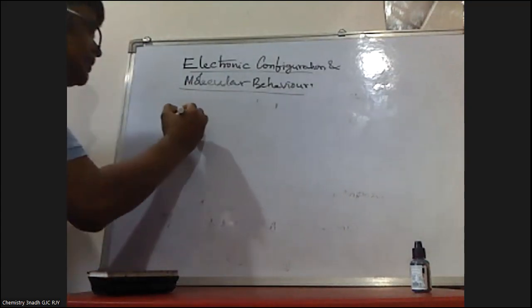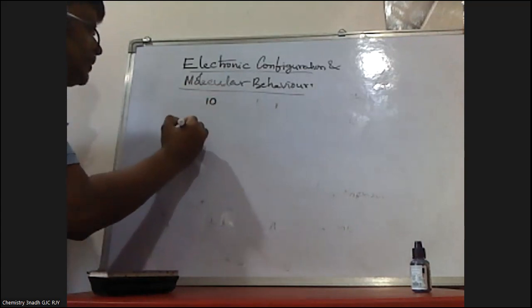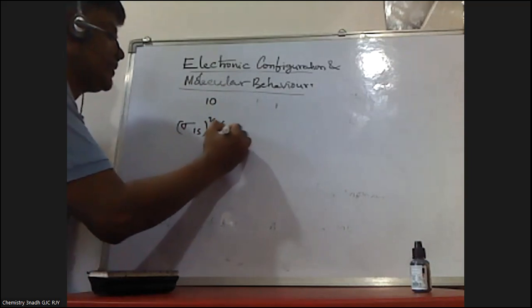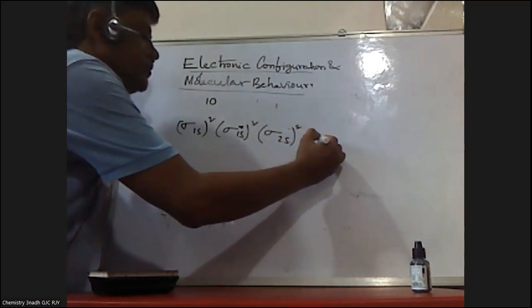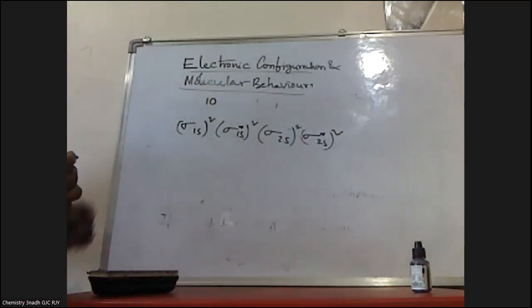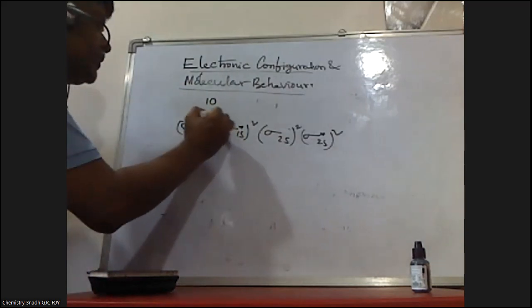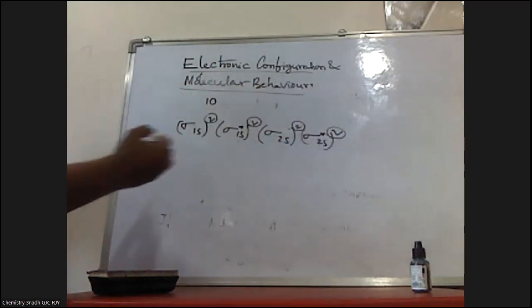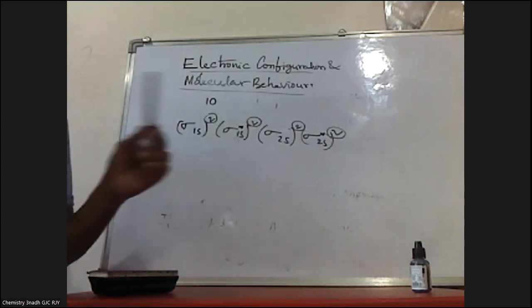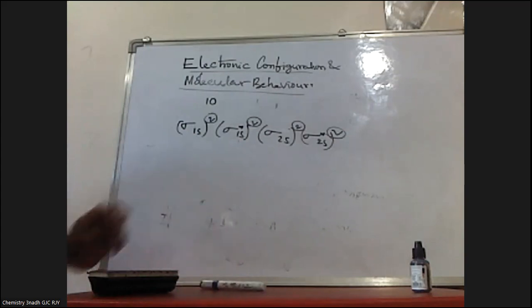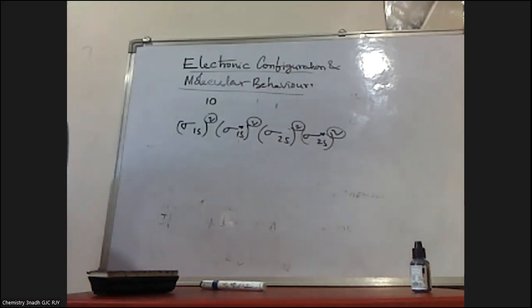How to write electronic configuration? For example, if there are 10 electrons, then sigma 1s squared, sigma star 1s squared, sigma 2s squared, sigma star 2s squared — like this, we write the electronic configuration for various molecules. Bond order is half the difference between electrons in bonding molecular orbitals and anti-bonding molecular orbitals. Bond length is inversely proportional to bond order, and bond energy is directly proportional to bond order. We can also determine the magnetic behavior of the molecules. Thank you for watching. Please like the video, share and subscribe the channel.